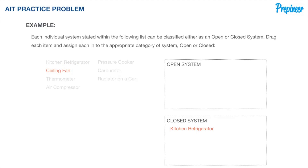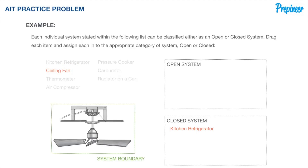Now let's talk about a ceiling fan. Here is a schematic with the system boundary shown. A ceiling fan converts electricity supplied to the fan motor into work to rotate the blades. As the blades rotate, air flows into and back out to the surroundings. There is both transfer of mass and energy, which makes a ceiling fan an open system.